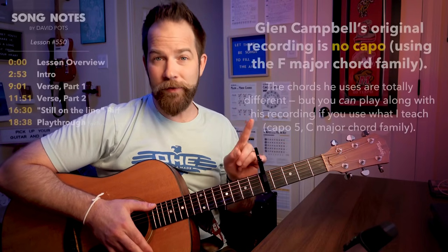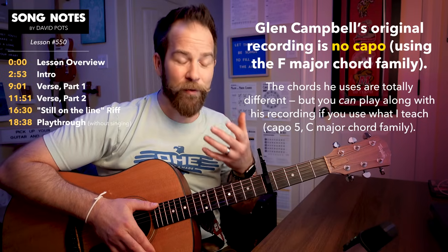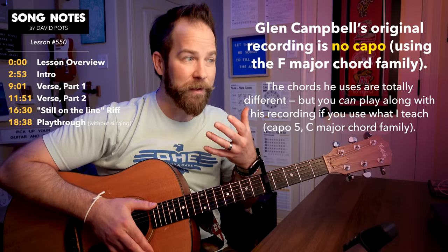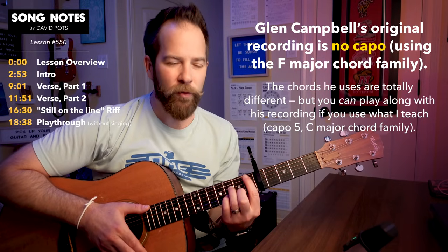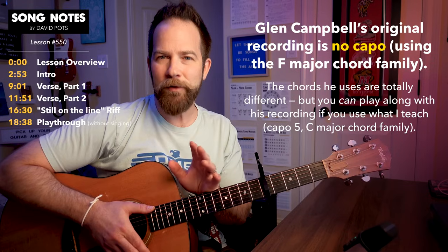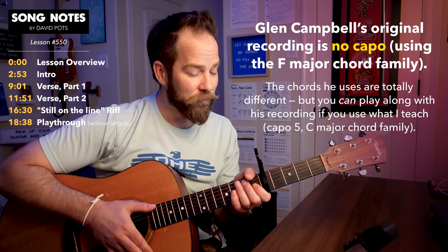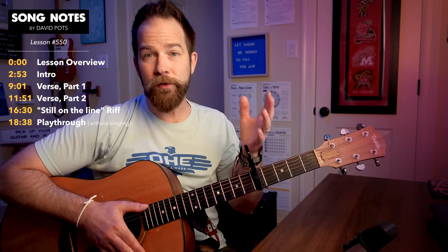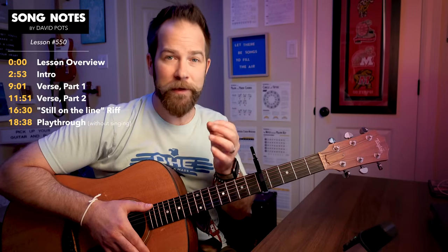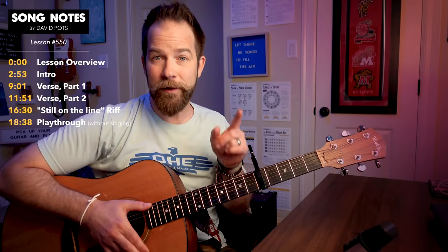It shows you why this arrangement is one for the ages, an all-time great, an all-time classic. I can't wait to teach it for you here. Now, here's the deal. I'm going to be using a capo in the fifth fret. The reason I'm doing this is it lets us use a bit more straightforward and easy-to-play chords so that you can hopefully get going with this if you're not quite at the level of playing it like Glen Campbell.